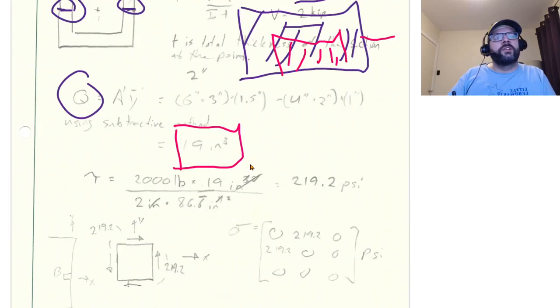Which when we start plugging stuff in, so our shear load is 2,000 pounds, 19 inches is our Q divided by 2 inches times 86.67 inches to the fourth. So again, with these inches to the third on the top we can cancel those out and cancel out the inch on the thickness term and we can cancel out two of the inches on the I term, which leaves us in psi pounds per square inch and the value of that is going to be 219.2 psi.